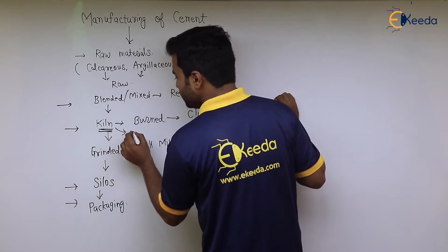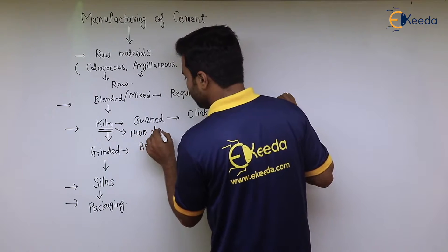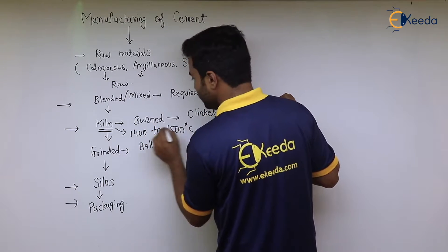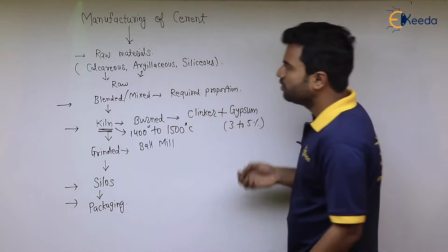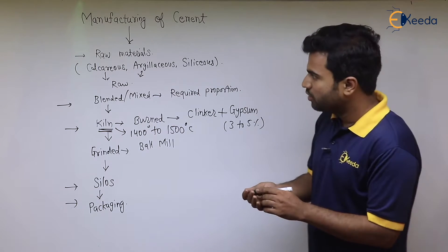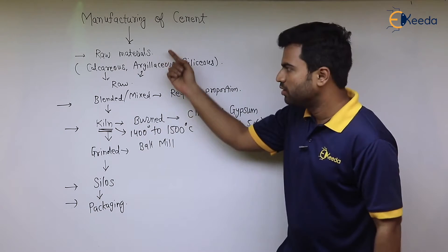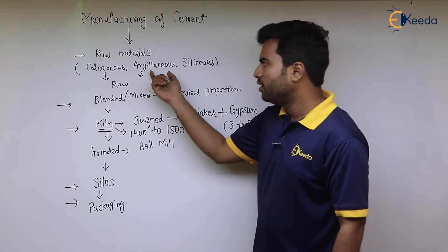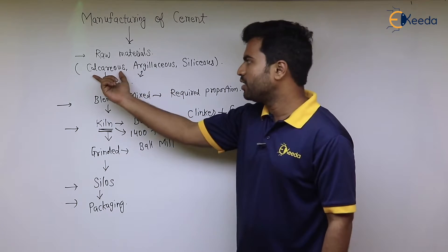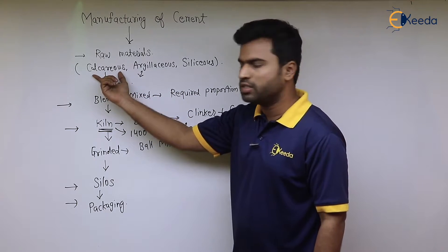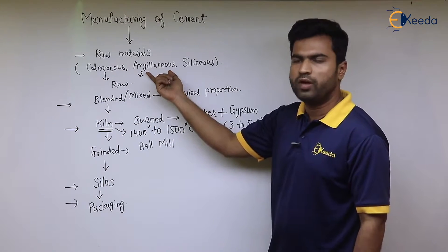The burning temperature in the kiln is generally 1400 to 1500 degrees Celsius. The raw materials are calcareous or argillaceous: calcareous materials contain calcium and argillaceous materials contain alumina.